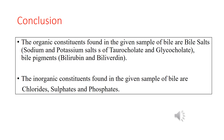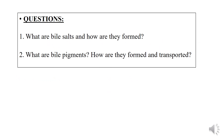In conclusion, the organic constituents found in the given sample of bile are bile salts — sodium and potassium salts of taurocholate and glycocholate — and bile pigments, which are bilirubin and biliverdin. The inorganic constituents include chlorides, sulphates, and phosphates. The questions to review are: what are bile salts and how are they formed, and what are bile pigments and how are they formed and transported?